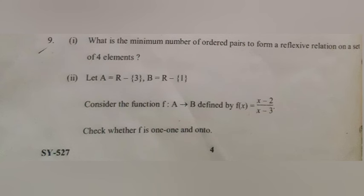Problem 9.1: What is the minimum number of ordered pairs to form a reflexive relation on a set of 4 elements? Answer: 4.